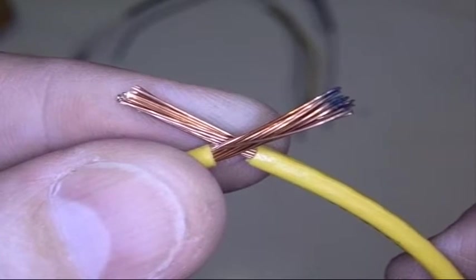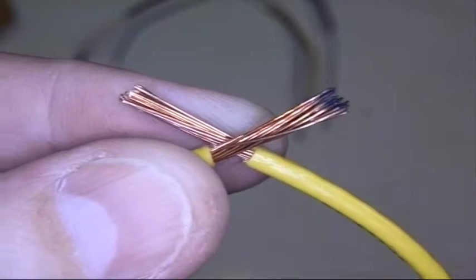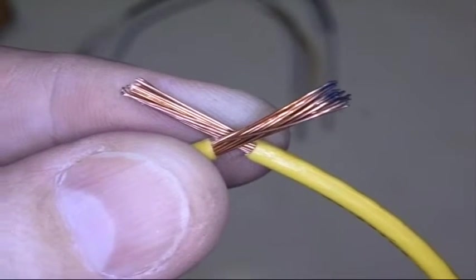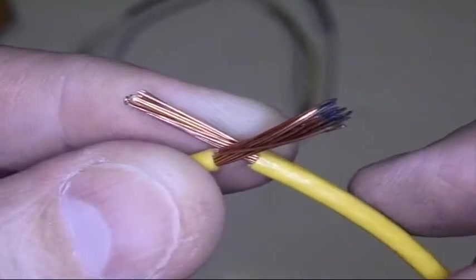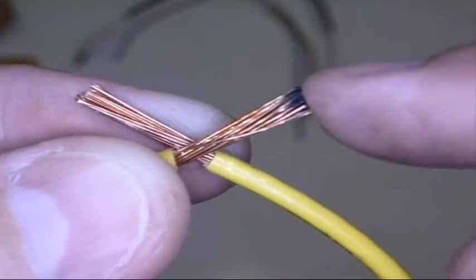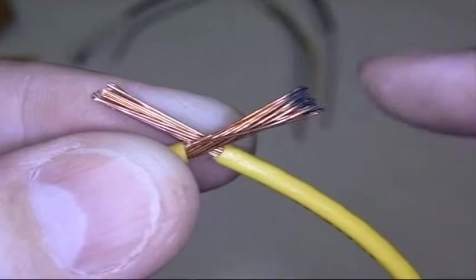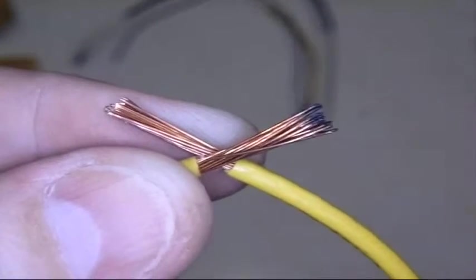There are four steps to good soldering. The first one is to have a good, clean joint. You want it mechanically sound and you want it clean. You can see right here, this is not clean. I'm going to cut that out of there and re-prepare this.